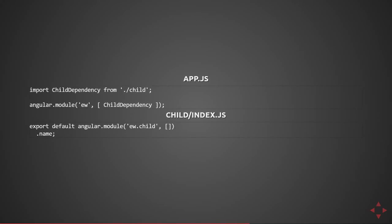Next, let's talk about utilizing ES6 modules. Here we have two files: app.js, which imports the child dependency and has the root portion of the Angular module, and child/index.js, which defines the child module. In the child I export the default Angular module and then append .name at the end. The reason .name is important is it takes the ew.child name and exposes it to any module that wants to import it. So the import statement in app.js is extremely simplistic, and because I export the name I don't have to use strings all over the place for dependency modules.